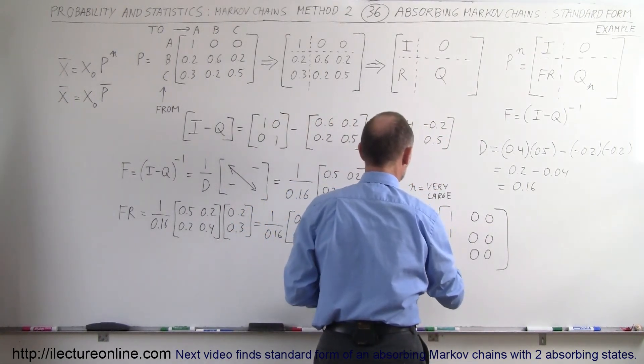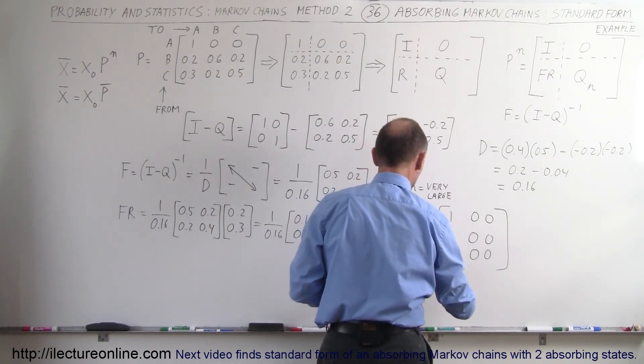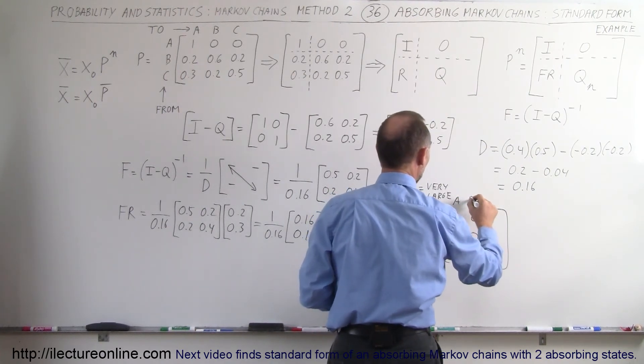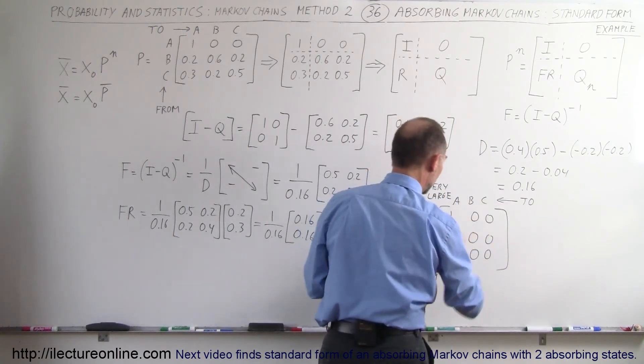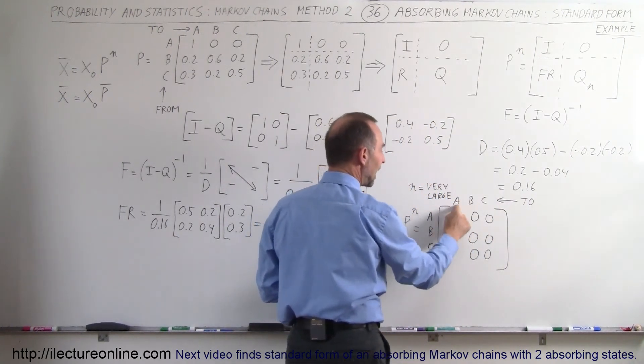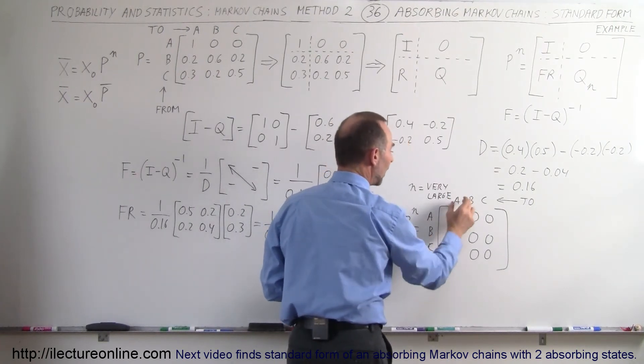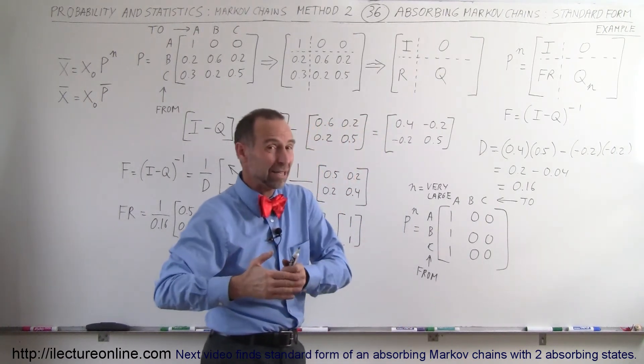And just to check what this means: these are the from states and these are the to states. So we go from A to A, 100% of customers in A go to A. From B to A, 100% of customers go from B to A. Now since in the end B ends up with 0 customers that means no customers will be going to A.